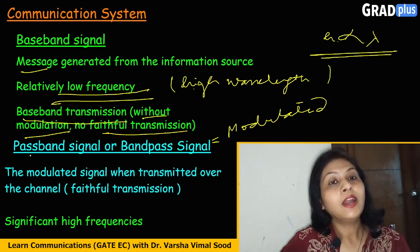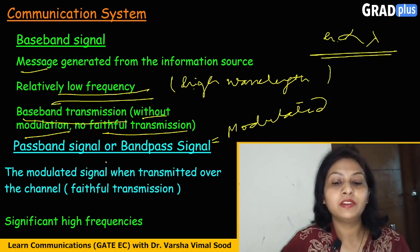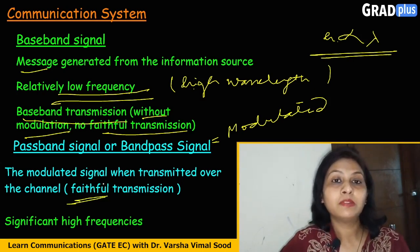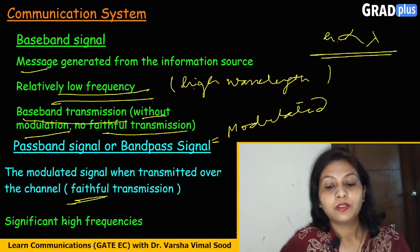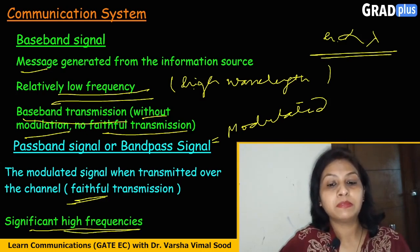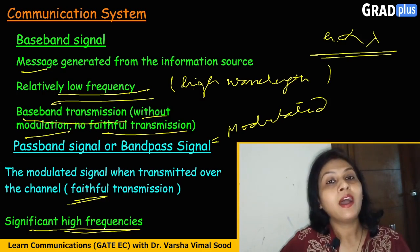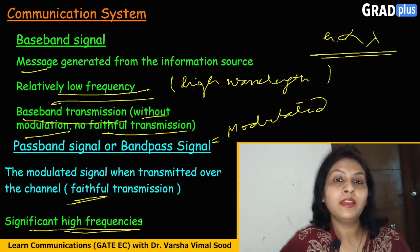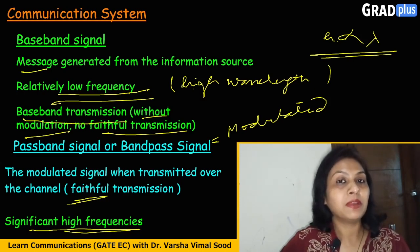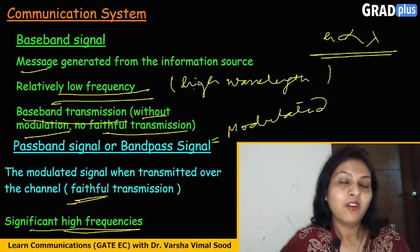Looking at the other type of signal — the passband signal, bandpass signal, or modulated signal — this signal is obtained after modulation. We have already studied the various advantages of modulation in our previous lectures. The key distinguishing feature between baseband and passband is frequency. Passband or bandpass signals are associated with high frequencies, because we are talking about the carrier signal. When one of the features of that carrier signal is changed or modulated in accordance with the message signal, it becomes the modulated signal, or the passband or bandpass signal.